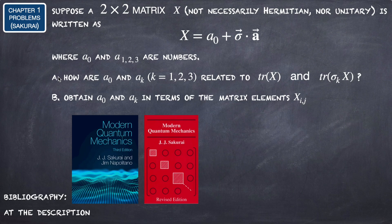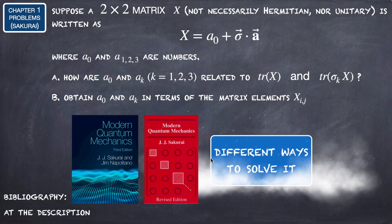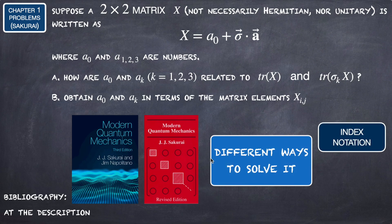First, we are going to find how the coefficients A0 and Ak are related to the trace of X and to the trace of sigma_K times X. Then we are going to find how these coefficients are related to the matrix elements Xij. We are going to solve this using index notation and using matrices as well.